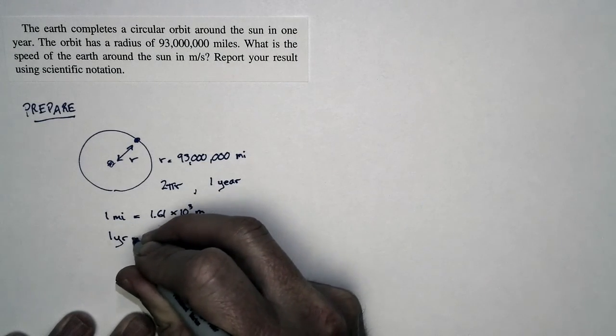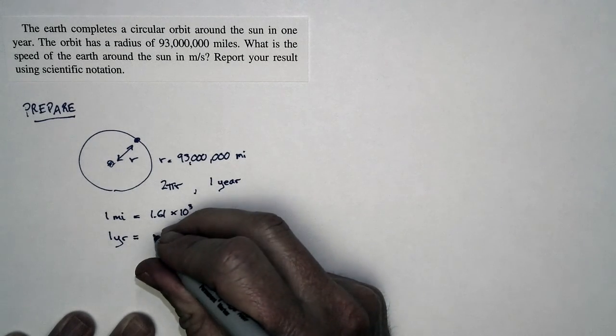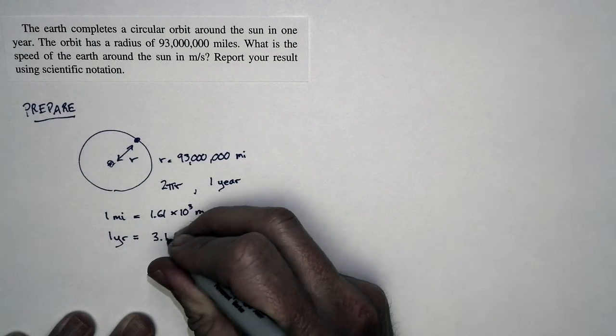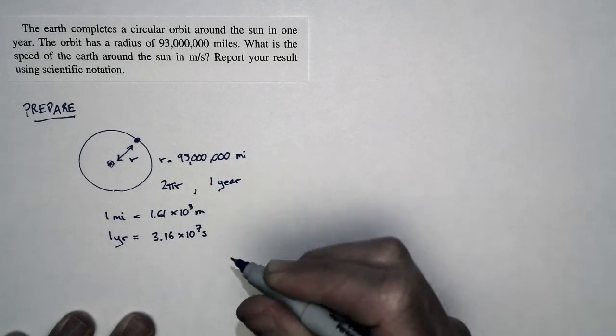And one year. Now we could convert years to days, days to hours, hours to seconds, but let's just cut to the chase and figure out what one year is. One year is 3.16 times 10 to the seventh seconds.